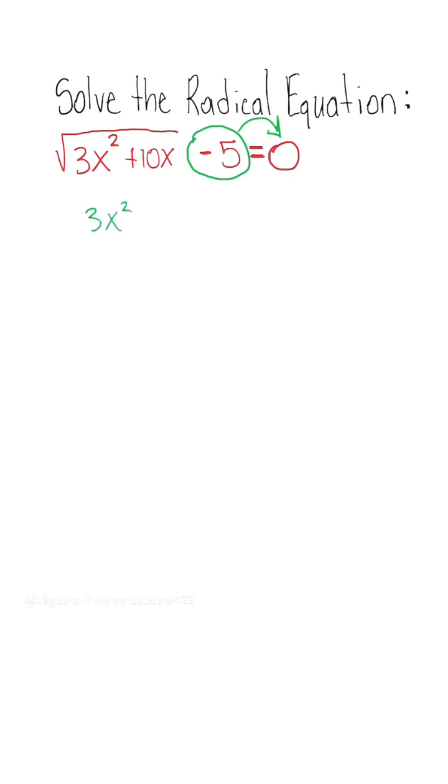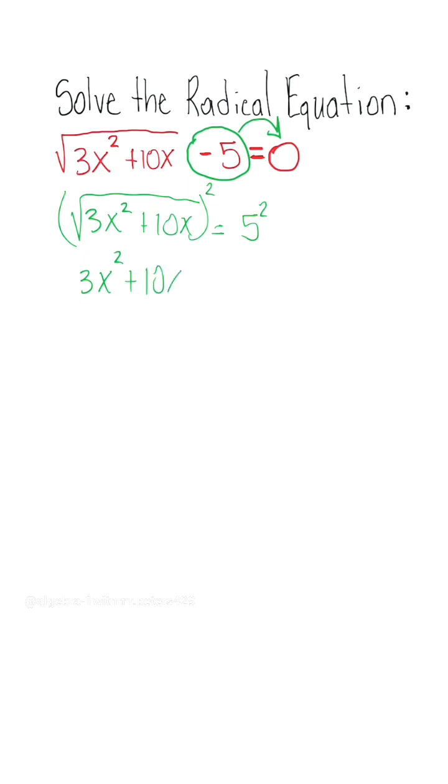So we have radical 3x squared plus 10x is equal to positive 5. Now this is when we're going to get rid of our radical by squaring both sides. The radical and exponent cancel out, we're left with 3x squared plus 10x is equal to positive 25.